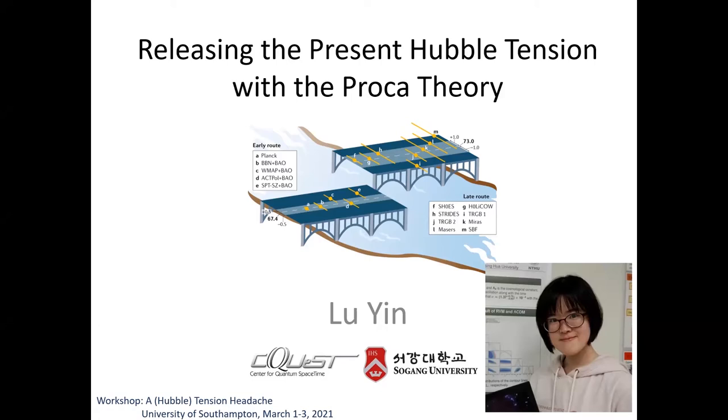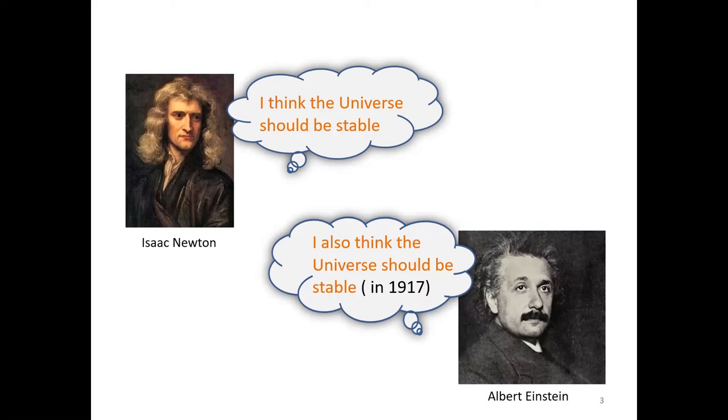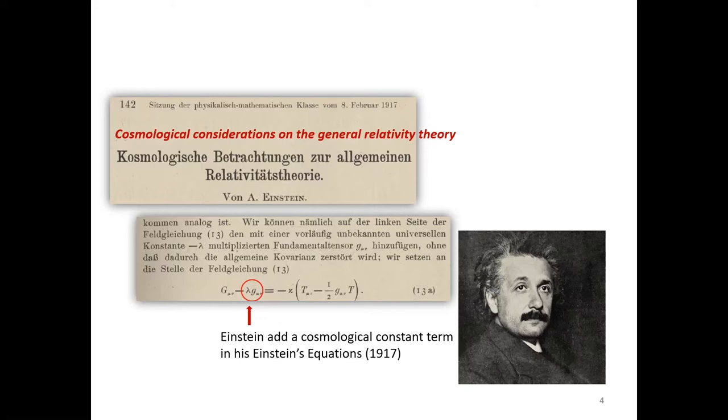Human beings are always looking forward to understanding our universe. 600 years ago, Isaac Newton thought the universe should be stable and wrote down his second law of motion. This equation explained our solar system very well at that time. When Albert Einstein was young, he also followed Newton's idea and thought the universe should be stable. In his first paper about general relativity theory in 1917, Einstein wrote down his Einstein equation. This equation led to a dynamic universe naturally. In order to keep the stable universe, he added another cosmological constant term in his Einstein equation.